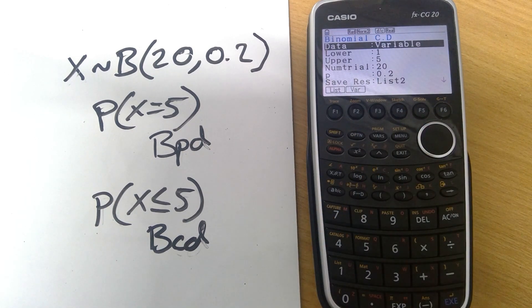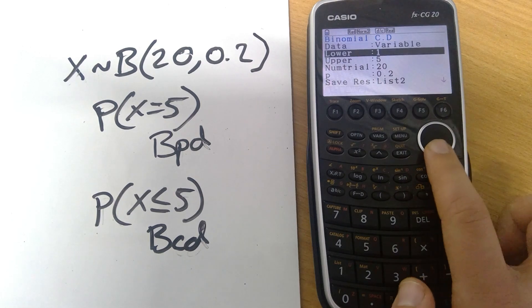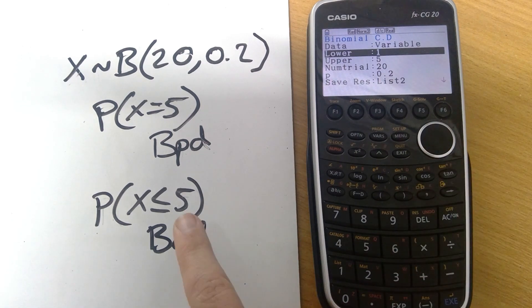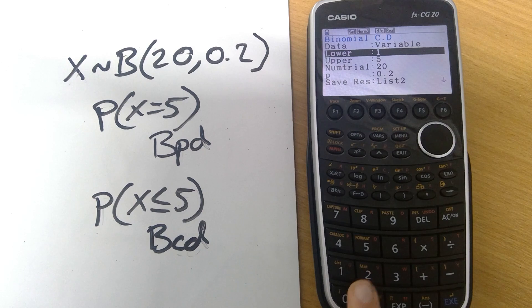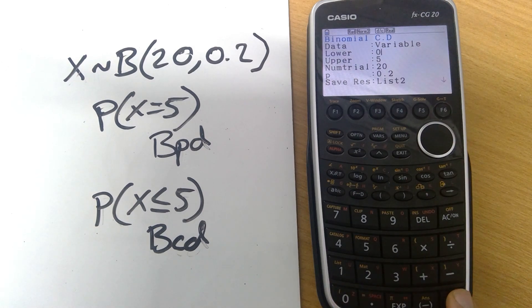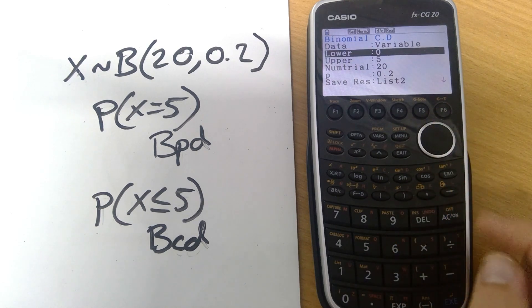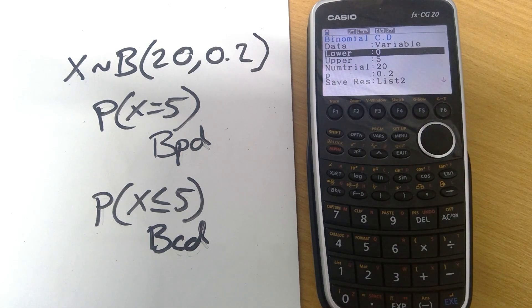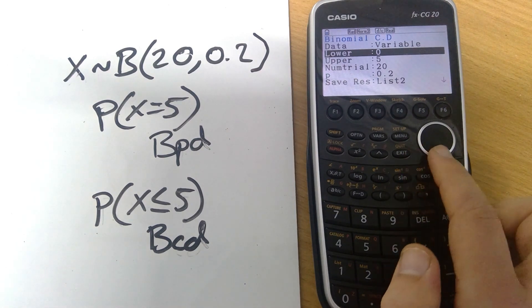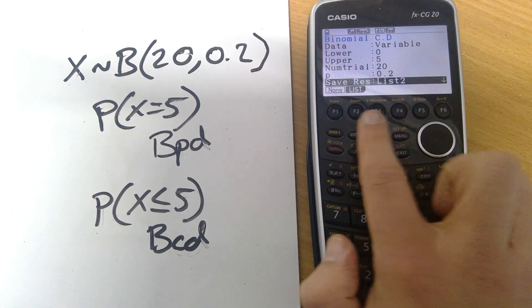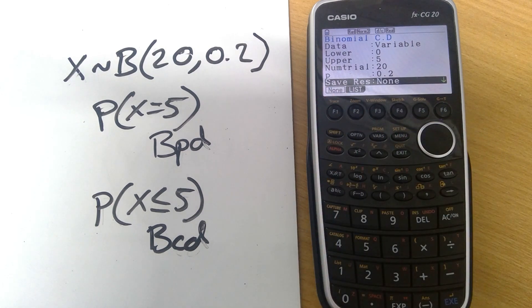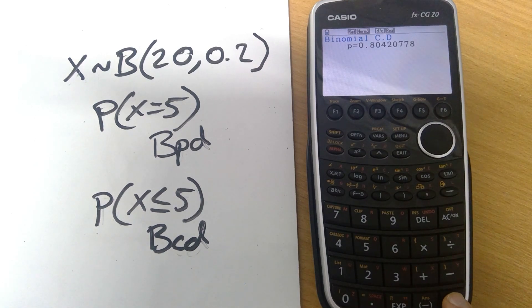Here we need to specify what we're going from. If we want less than or equal to five this means that we are starting with a lower value of zero, we want from zero all the way up to five. But we could change that lower value to being something else if we just wanted the cumulative distribution say from three to five or something like that. Again I'm going to say save result none, pressing execute, that is the cumulative distribution, the answer to this question probability X is less than or equal to five.